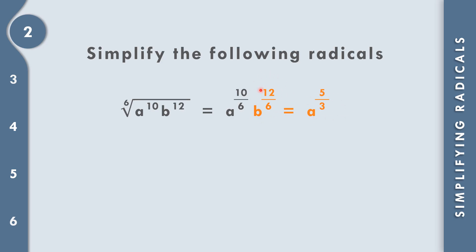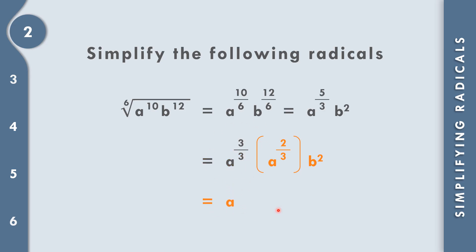For a to the 5 over 3: we take out as many whole groups of 3 as possible. We get a to the 3 over 3 — that is a to the 1, or simply a — with a remainder of 2 over 3. So we have a times a to the 2 over 3. For b squared, 3 divided by 3 equals 1, so it becomes a whole number b squared. Converting a to the 2 over 3 back to radical form gives the cube root of a squared. The final answer is ab squared times the cube root of a squared.